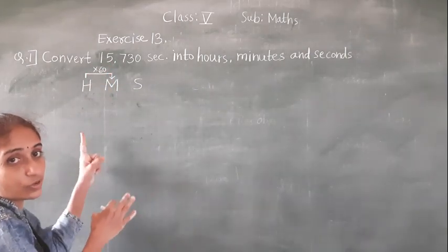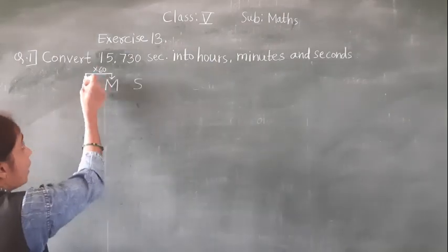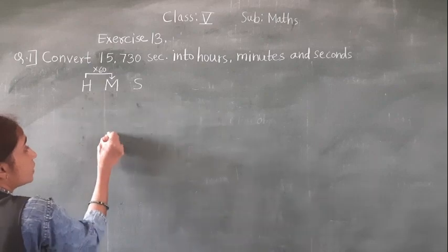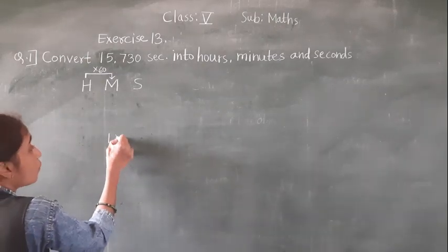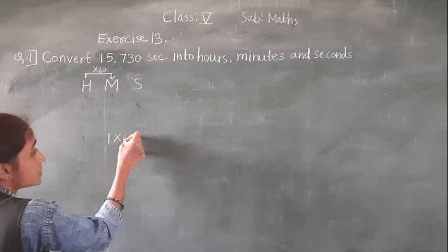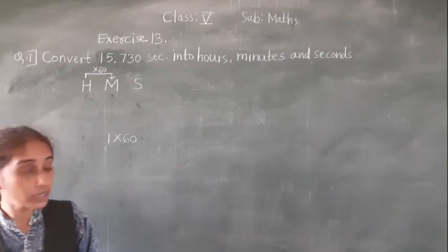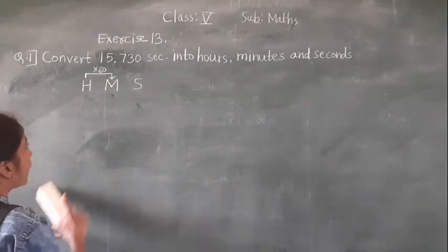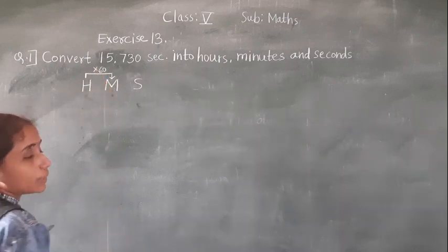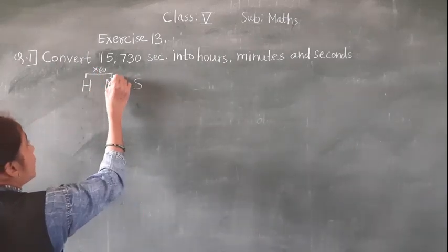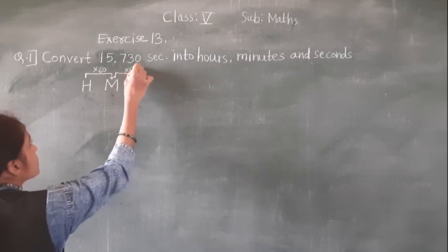We multiply by 60. 1 hour equals 60 minutes. So for 1 hour we have to multiply by 60. Hours convert into minutes: multiply by 60. Minutes convert into seconds: multiply by 60.